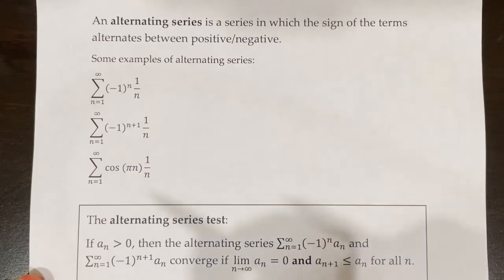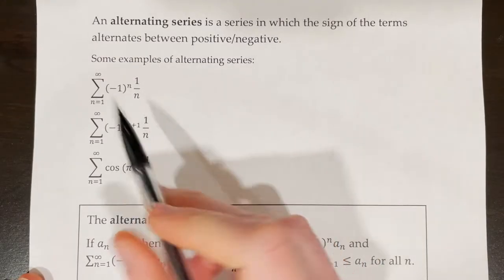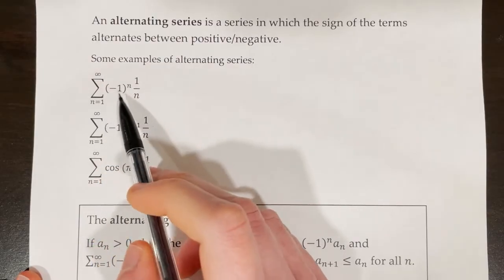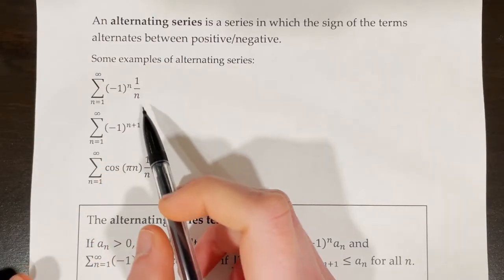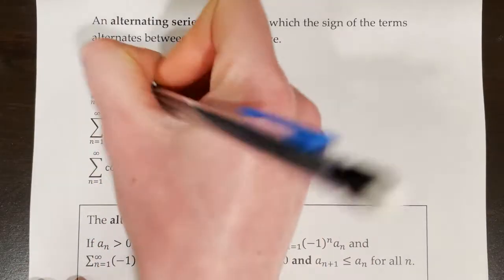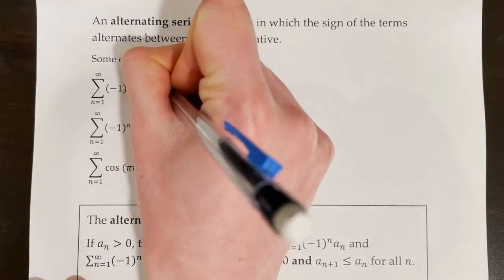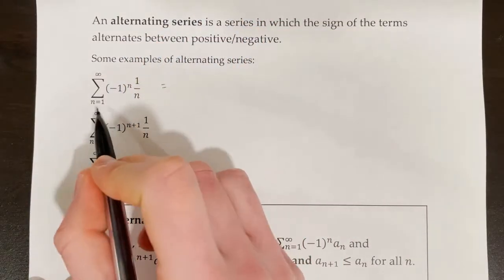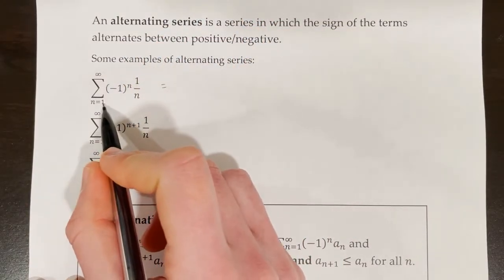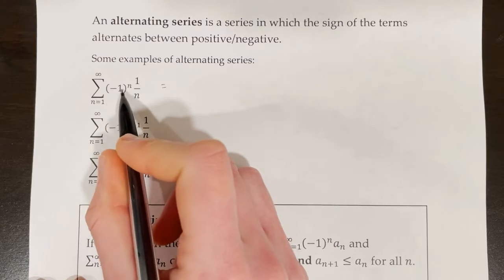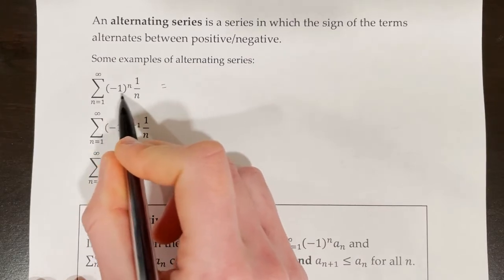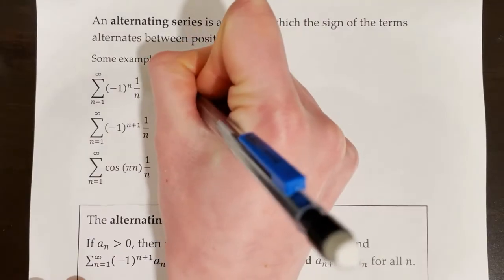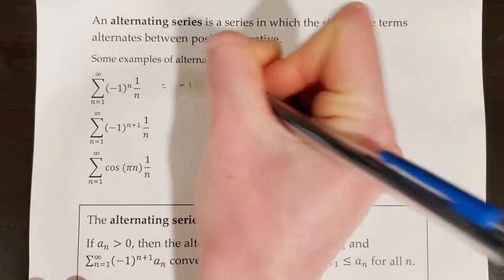Let's take a look at some examples of alternating series. First, we have the series from n equals 1 to infinity of negative 1 to the power of n times 1 over n. Let's plug in a few terms. If we plug in n equals 1, we have negative 1 to the power of 1, which is negative 1 times 1 over 1. That first term is going to be negative 1.